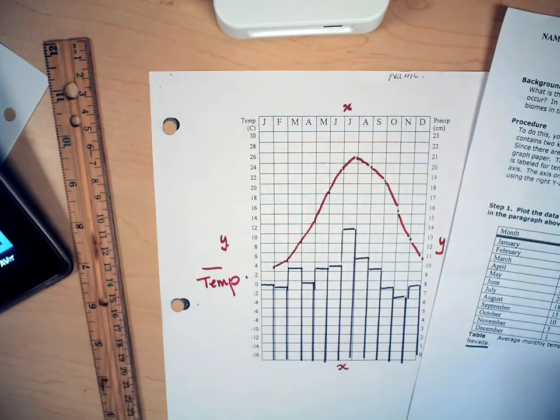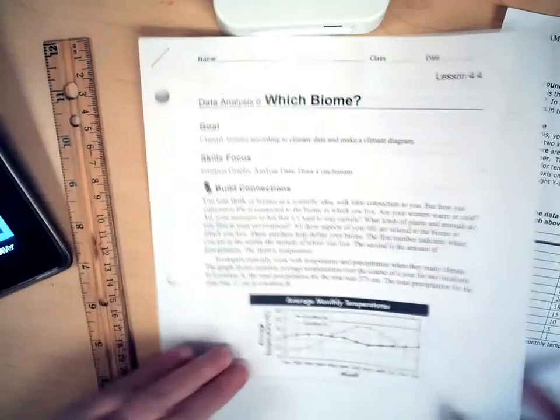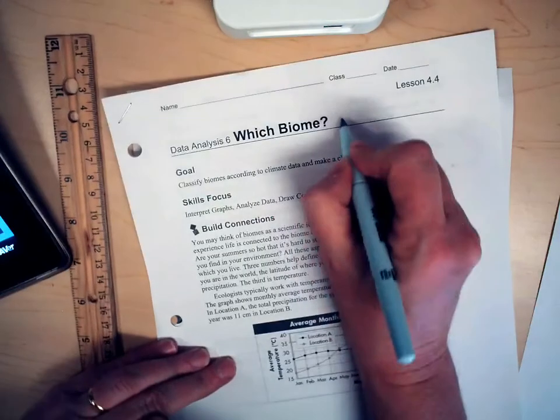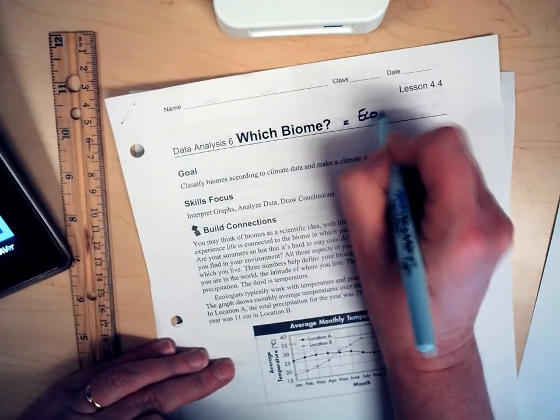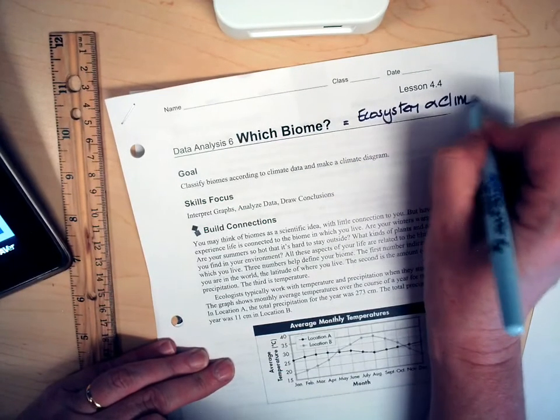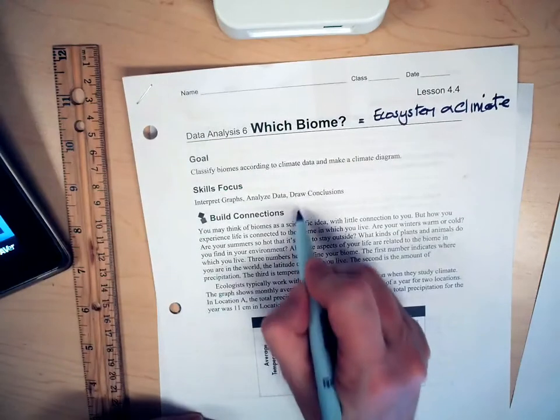So once you have completed that, we are going to take out the which biome sheet. Now we talked today about a biome. We know that a biome is the ecosystem and climate. Please read this section.